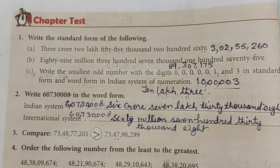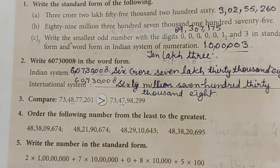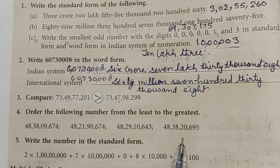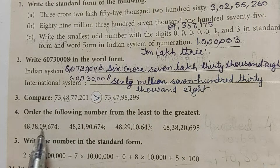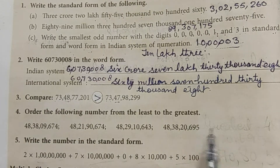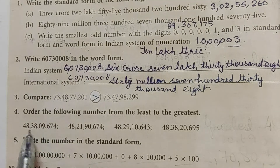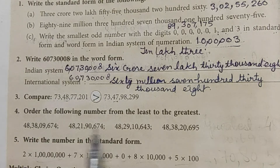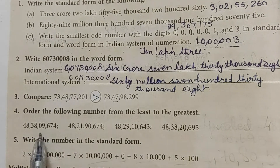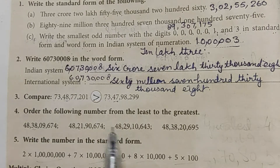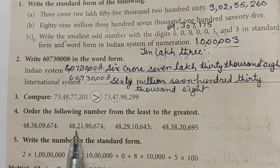Order the following numbers from least to greatest — that means smallest to greatest. First we count the number of digits: all four numbers have the same count. Then comparing digits: two numbers have three and two numbers have two in the next position, and comparing further, one is smaller than nine, so this is the least.